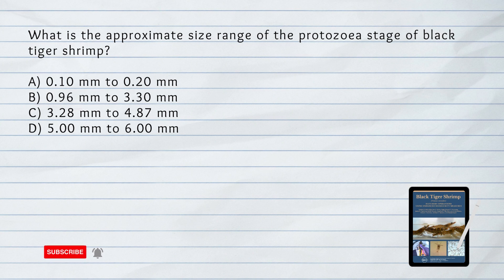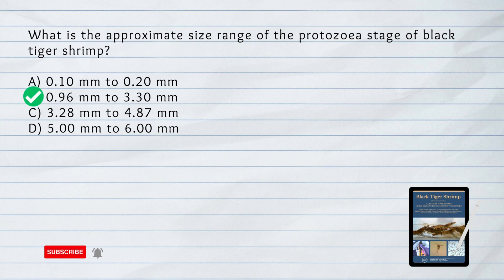What is the approximate size range of the Protozoea stage of black tiger shrimp? A. 0.10 to 0.20 millimeters. B. 0.96 to 3.30 millimeters. C. 3.28 to 4.87 millimeters. D. 5 to 6 millimeters. Answer: B. The Protozoea stage of black tiger shrimp measures from 0.96 millimeters to 3.30 millimeters in total length.